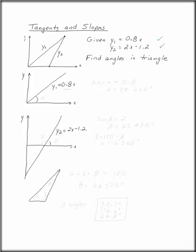So let's look first at y1. y1 is 0.8x. We can use this slope to find that angle. The tangent of this angle, alpha, is the slope of the line, 0.8x. So you can solve this. Alpha is 38.660 degrees.